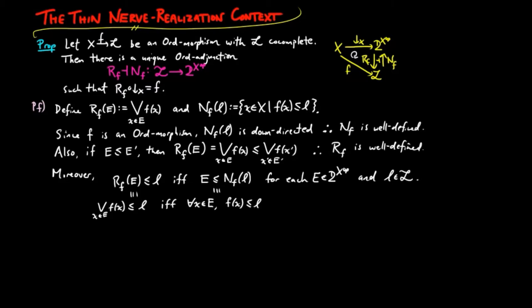And this is equivalent to E is less than or equal to Nf on l. Therefore we have an order theoretic adjunction Rf left adjoint to Nf.